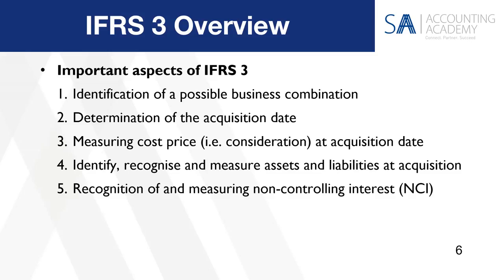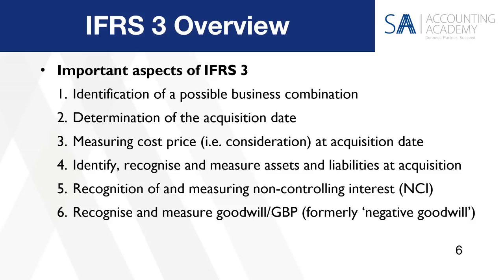Step number five: recognition and measurement of non-controlling interest. Now, remember, that will obviously only apply when you acquire an equity interest — that means an investment in the shares of another entity — and it's not a wholly owned subsidiary, but you do obtain control. For example, you acquire a 60% interest and there's a 40% non-controlling interest that you have to measure and recognize at the acquisition date in a business combination.